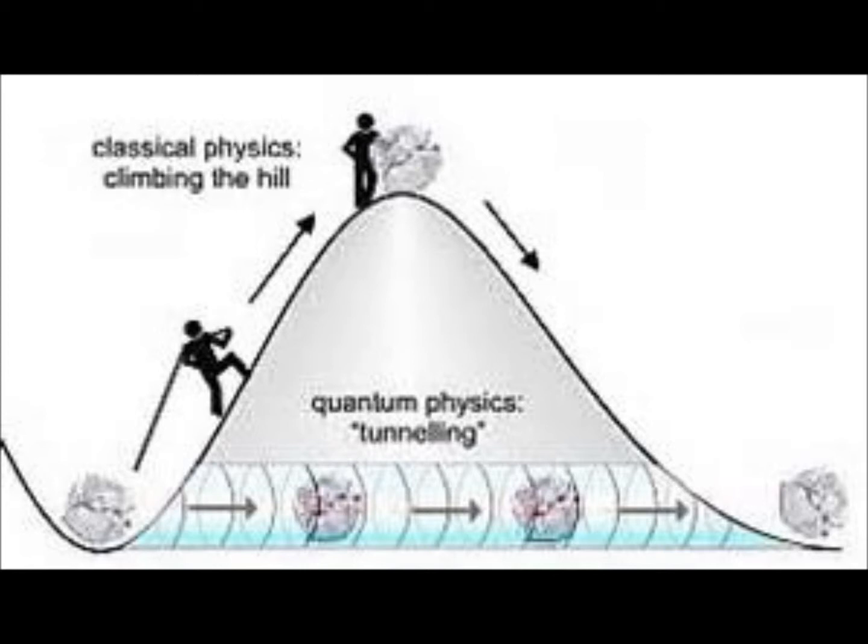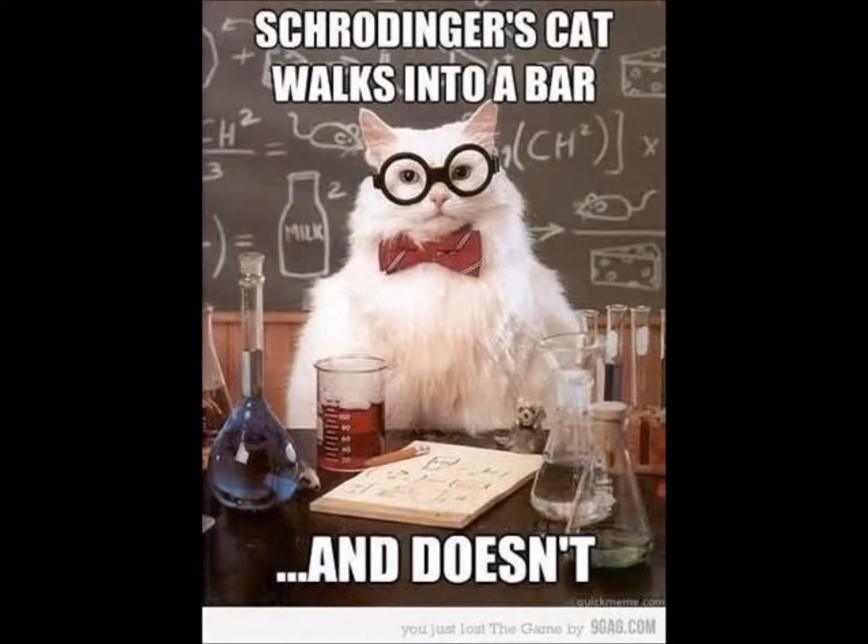An object could, in a sense, borrow energy from other objects to tunnel through the wall or roll over the hill, paying the other objects back by the reflected objects being more energetic than they otherwise would have been.